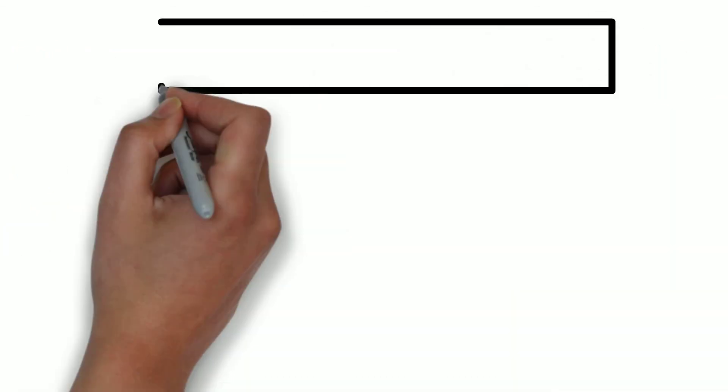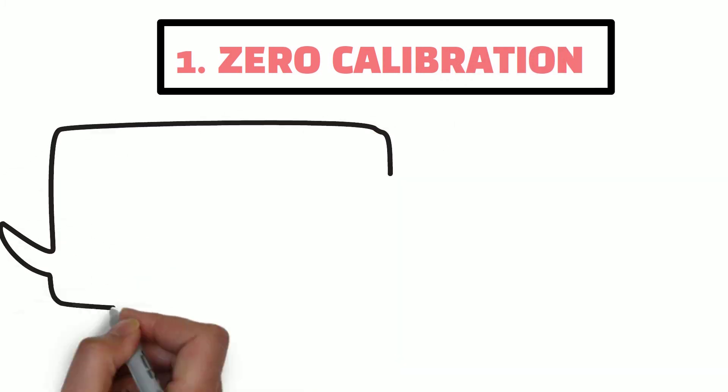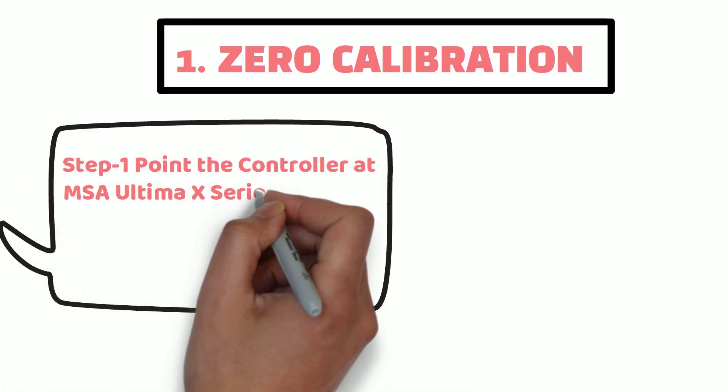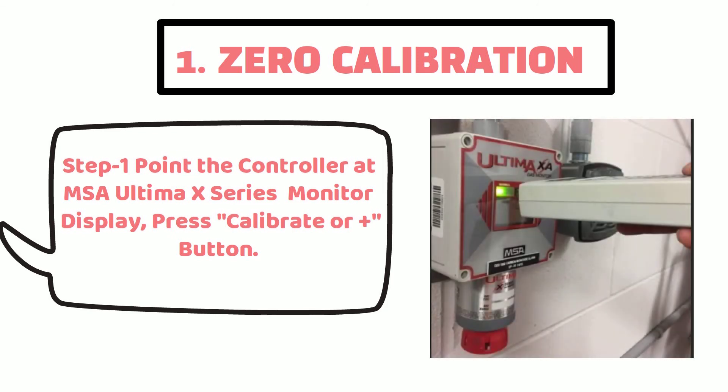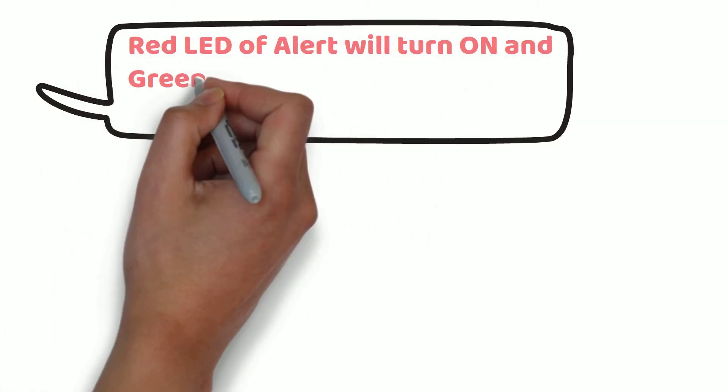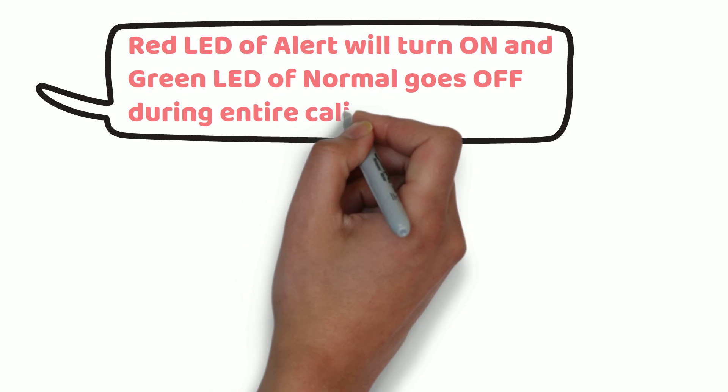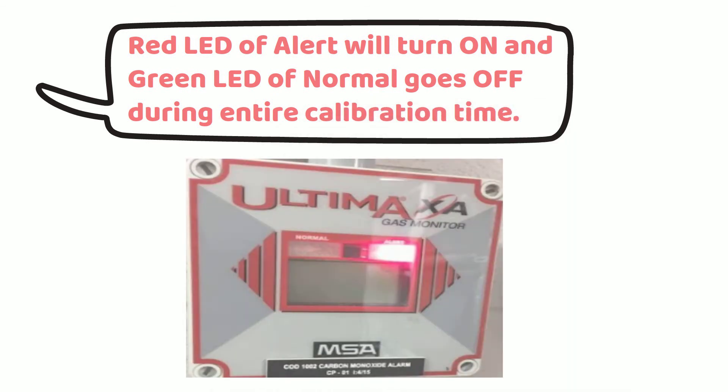Zero calibration. In order to start standard calibration, point the controller at MSA Ultima X-Series gas monitor display and press calibrate or plus button. When calibration starts, red LED of alert will turn on and green LED of normal will turn off.